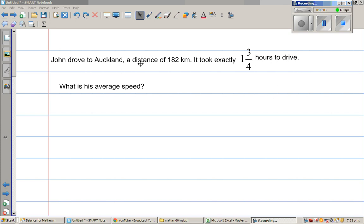John drove to Auckland a distance of 182 kilometers. It took exactly one and three quarter of an hour to drive. What is his average speed?